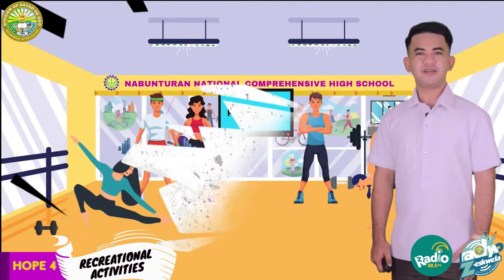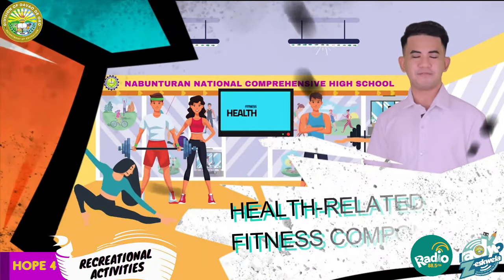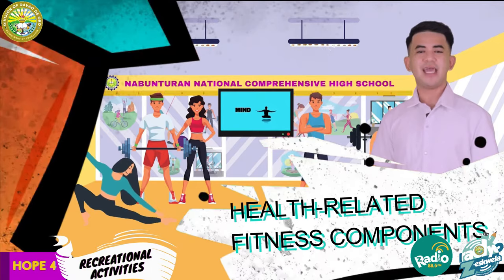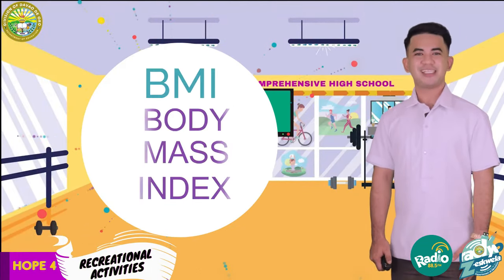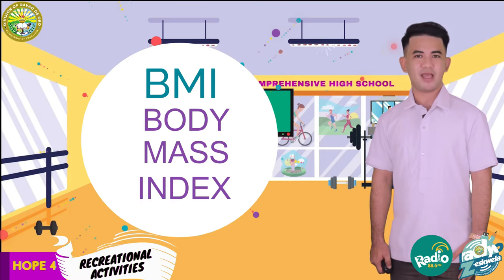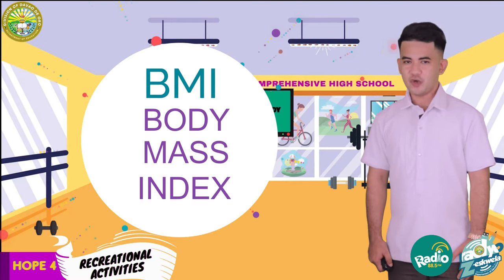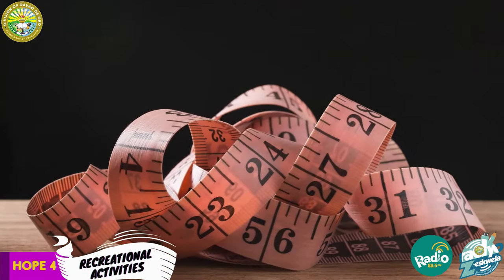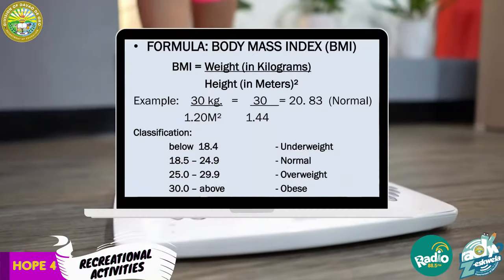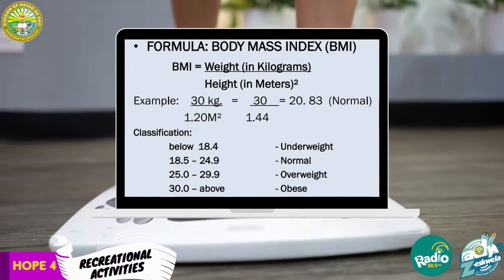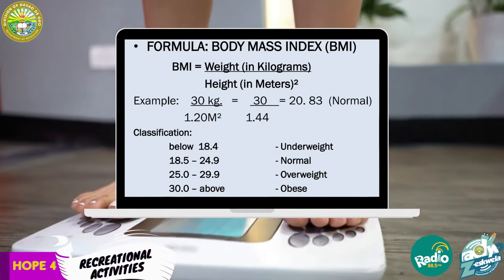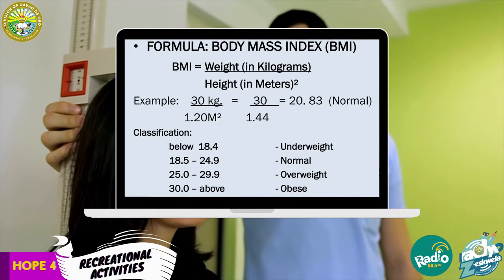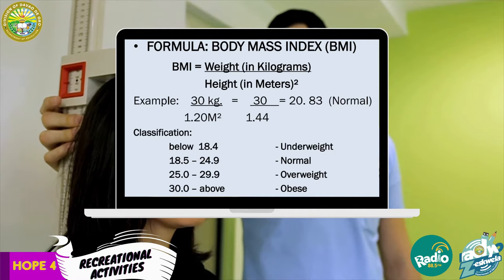Now that you know the different health-related components, let us get to know ways on how to assess and keep ourselves fit and healthy. The first one is getting your Body Mass Index or BMI. For this, you will need a weighing scale, a tape measure, and basic math skills. Measure your weight in kilograms, your height in meters, and compute for your BMI using this formula: BMI equals weight in kilograms over height in meters squared.